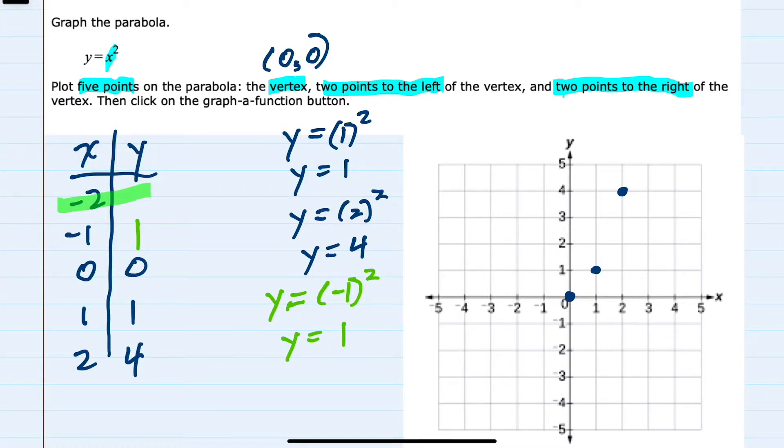And then lastly, we plug in minus 2. So y equals (-2) squared, which again gives us a positive 4.